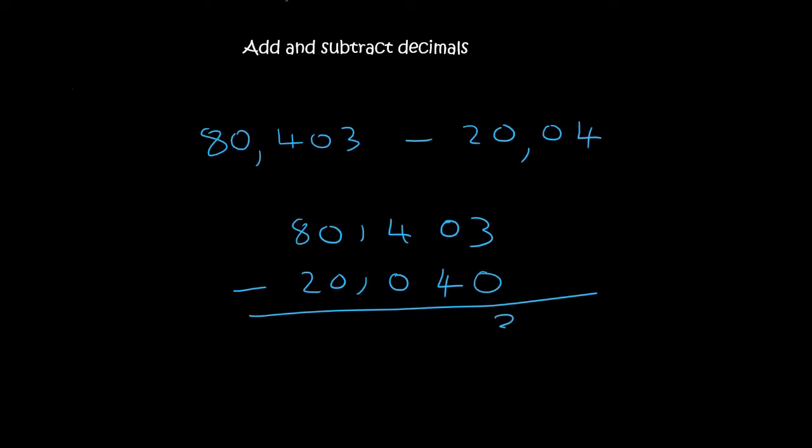So 3 minus 0 is 3. 0 minus 4 you can't do. So you borrow this 3. I mean this 4. And that becomes a 3. This becomes a 1. So it's 10 minus 4, which is now 6. Then you've got 3 minus 0, which is 3, 0, and 6. So 60.363.